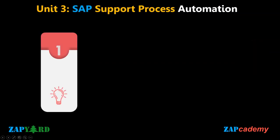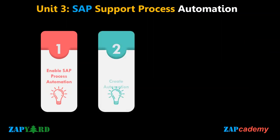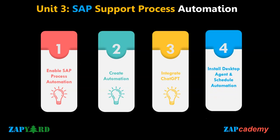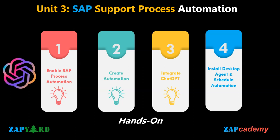We will have our first hands-on with applications in Unit 3. We will learn how to leverage SAP BTP Process Automation to automate the support process for SAP using ChatGPT for query analysis and responses. The first step is to enable SAP Process Automation within our SAP BTP environment. Next, utilize the SAP Process Automation capabilities to create and automate a workflow that handles the support process. Integrate ChatGPT within the automation workflow to analyze and understand queries from support emails, utilizing ChatGPT's natural language processing to extract intent and context, enabling intelligent decision-making and accurate responses.